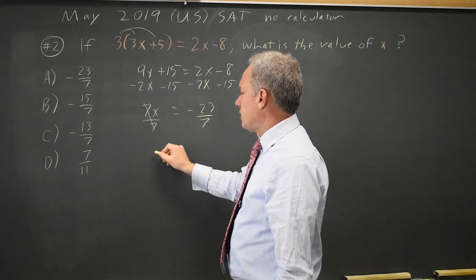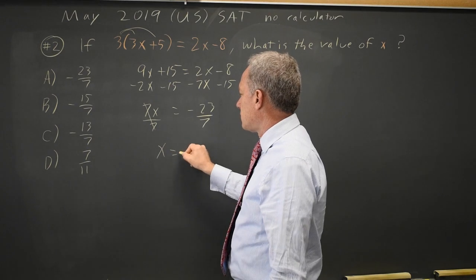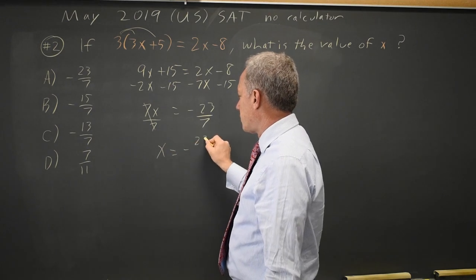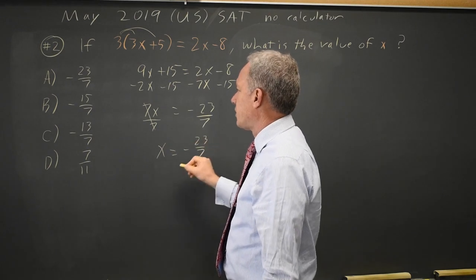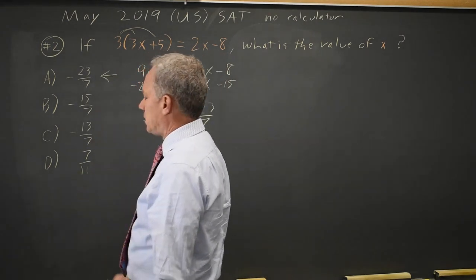7x over 7 — 7 over 7 is 1 — so that's 1x equals negative 23 over 7, which is choice A.